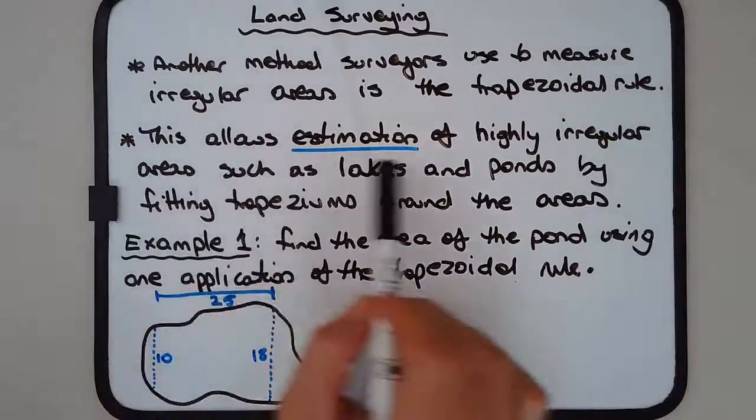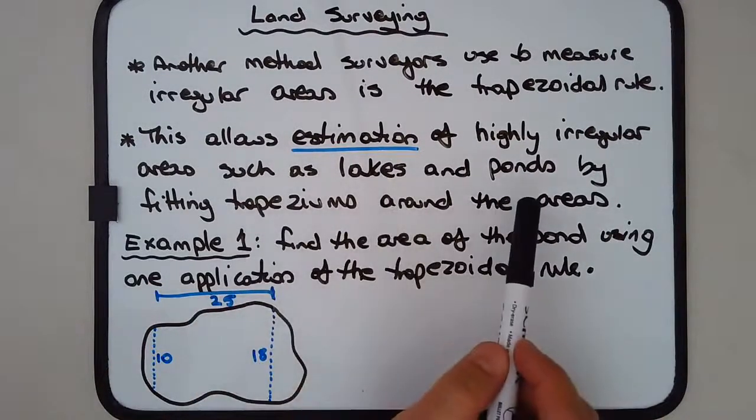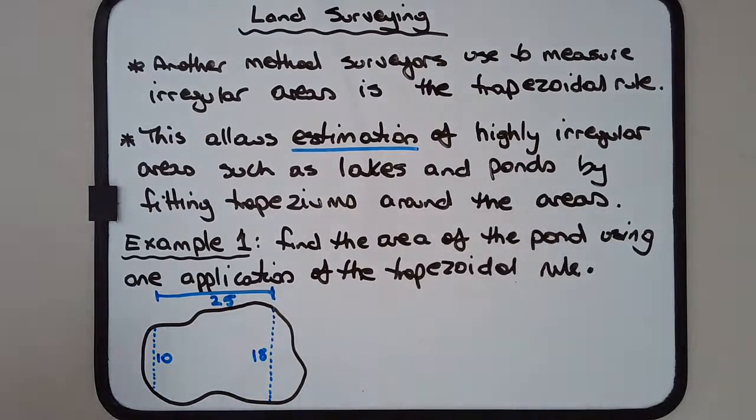What this does is that it allows estimation of highly irregular areas such as lakes and ponds. Compared to offset surveys where irregular polygons could be divided into neat triangles, trapeziums, and rectangles.